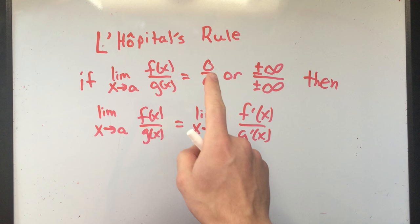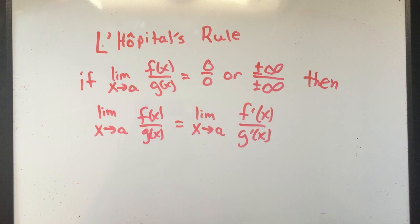It says that if you take a limit and you get 0 over 0, or plus or minus infinity over plus or minus infinity, so these are the cases - some indeterminate forms. I remember 0 over 0, that was what you always had trouble with when you started calculus.